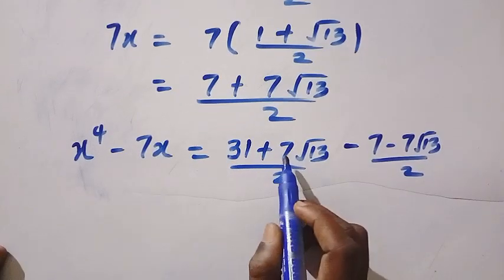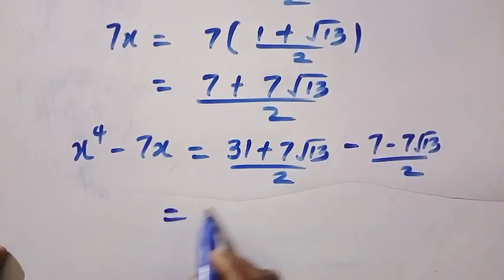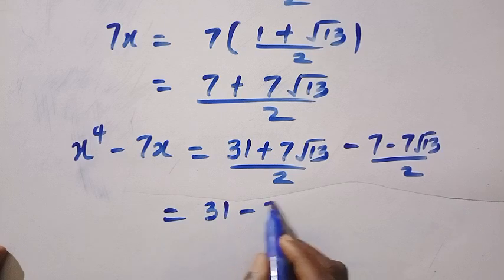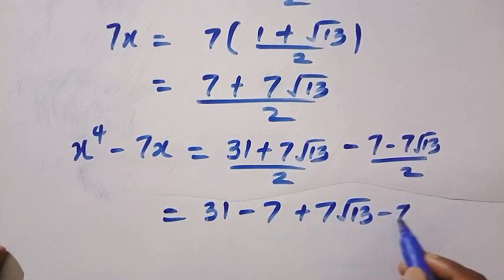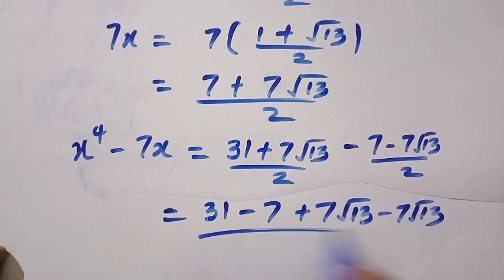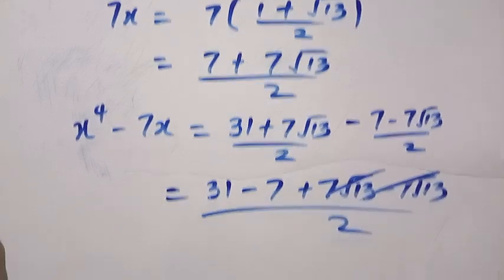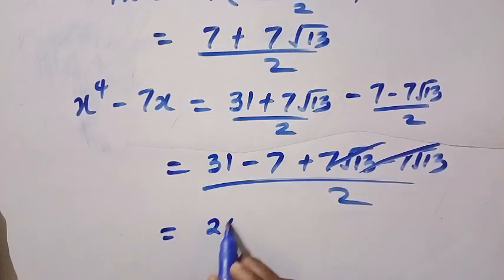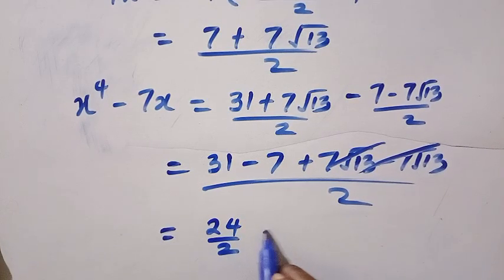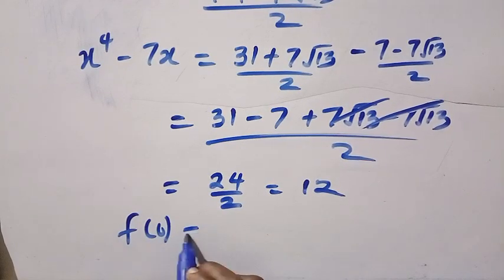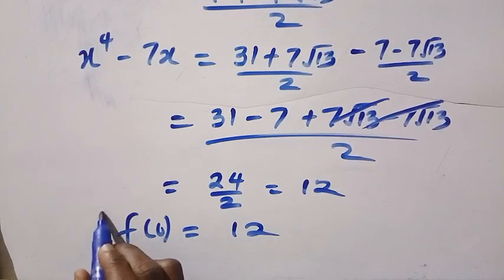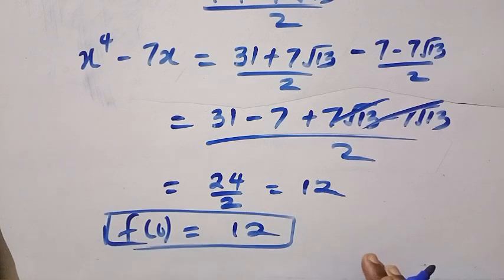By subtracting, x to the power of 4 minus 7x equals 31 plus 7 root 13 divided by 2, minus 7 plus 7 root 13 divided by 2. The 7 root 13 terms cancel, leaving 31 minus 7, that is 24 over 2, which equals 12. Therefore, f of 0 equals 12. This is how I solve this using the second method.